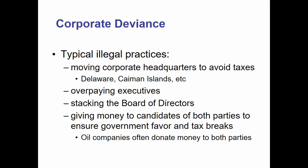Ponzi schemes are one of the more common types of corporate deviance. Corporate deviance is typically illegal. Some examples: moving corporate headquarters to avoid taxes. Many companies are based in Delaware specifically — even if they don't actually have headquarters there — because Delaware has very forgiving tax laws. The Cayman Islands is a territory close to the United States where people often move their corporations, basically just a P.O. box. Those things aren't inherently against the law in many cases — they're not necessarily illegal, but they are deviant in that they hurt society.